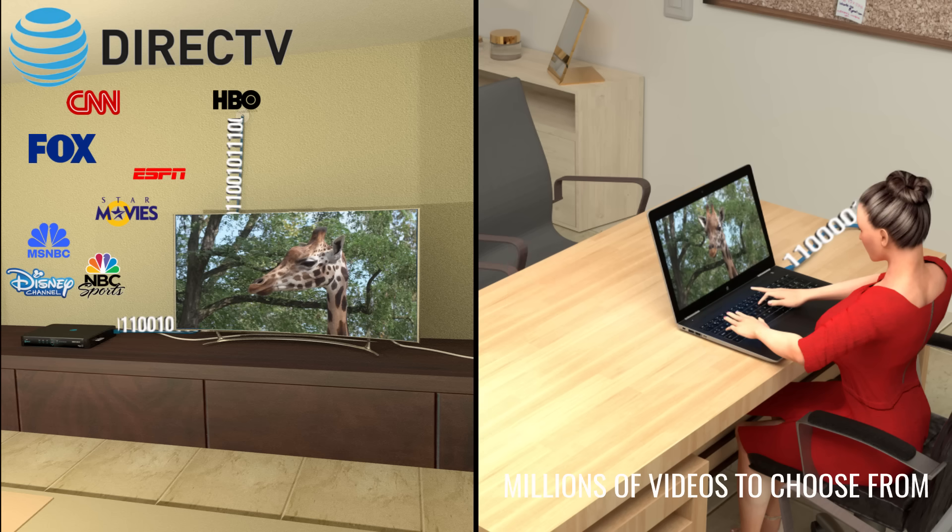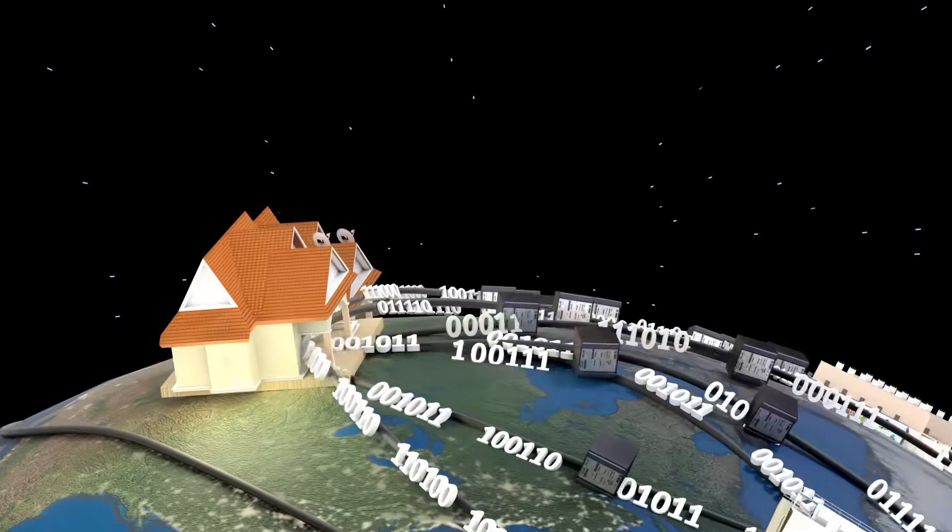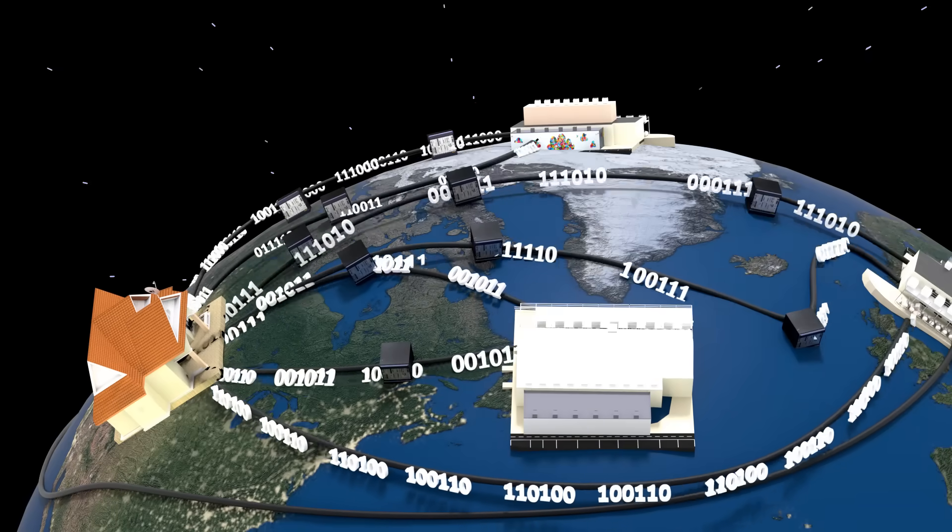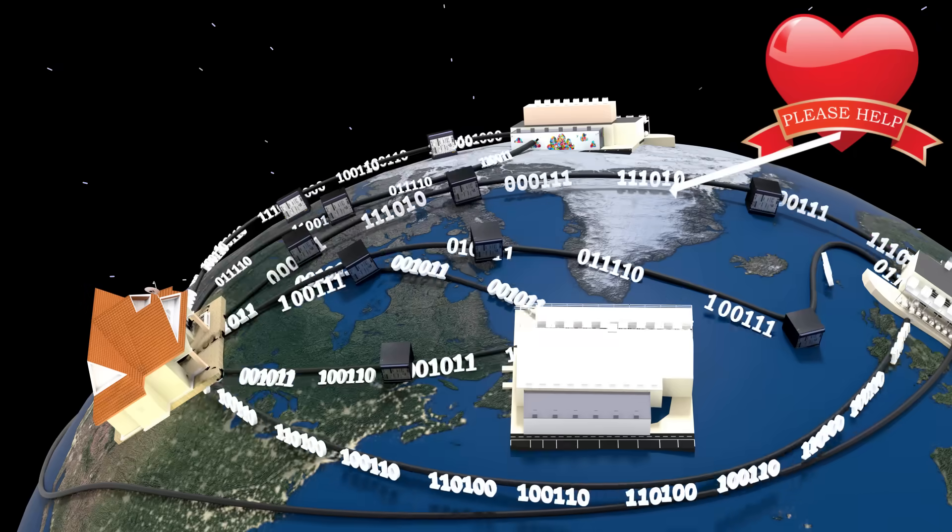This means that the volume of traffic handled by TV broadcasters is nowhere close to the level of Internet traffic, and it is this huge level of traffic on the Internet which may sometimes cause traffic congestion and buffering.